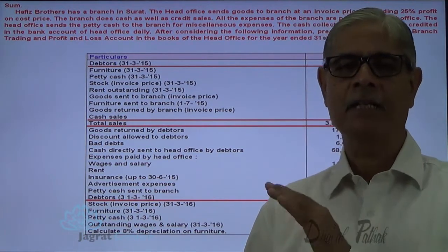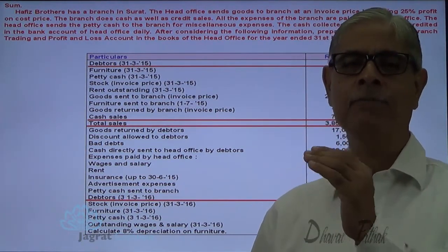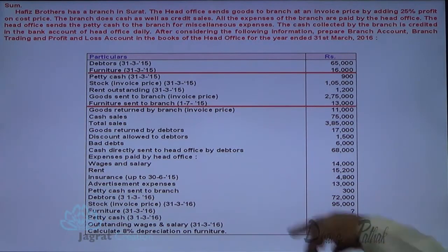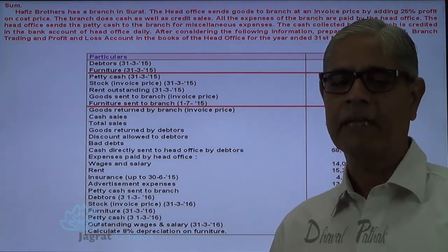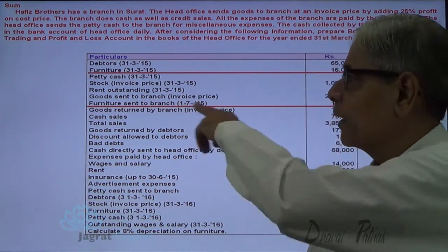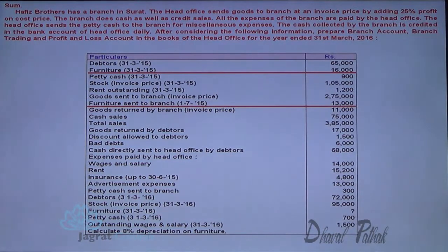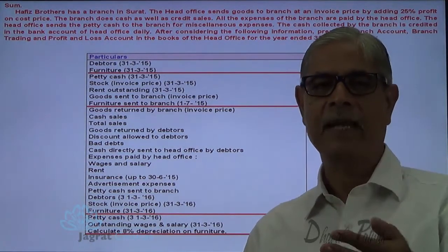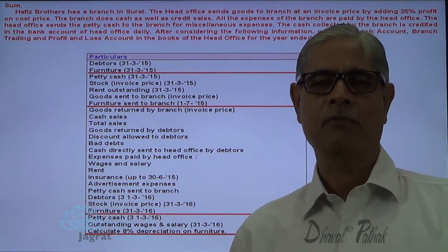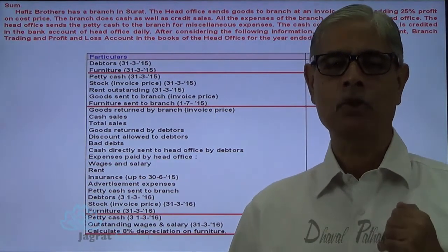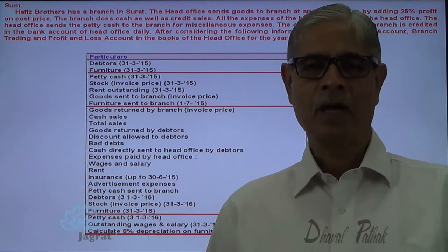Whatever cash is received from debtors is remitted by the branch directly into the bank account of the head office. Opening balance of furniture is given. Furniture sent during the year on 1-7-2015 means 9 months depreciation will be calculated — from 1-7-2015 to 31-3-2016, that furniture has been used for 9 months. The closing balance of furniture is missing, but depreciation at 8% is given. The closing balance of furniture at the branch is to be absorbed by the head office, and will appear in the branch account as a closing asset absorbed by the head office.